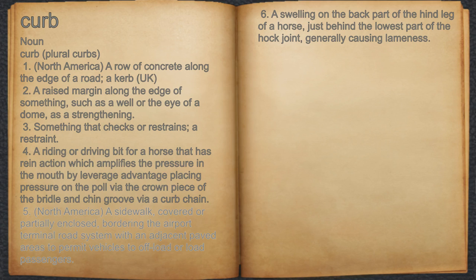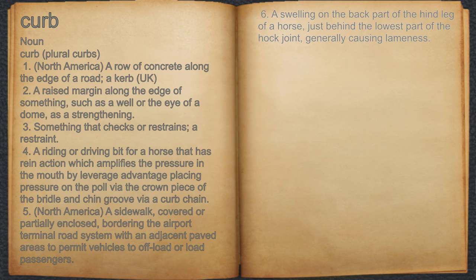5. North America: a sidewalk, covered or partially enclosed, bordering the airport terminal road system within adjacent paved areas to permit vehicles to offload or load passengers. 6. A swelling on the back part of the hind leg of a horse, just behind the lowest part of the hock joint, generally causing lameness.